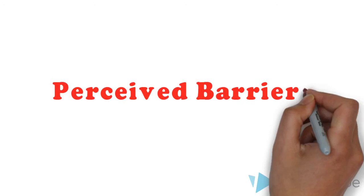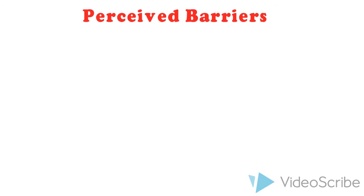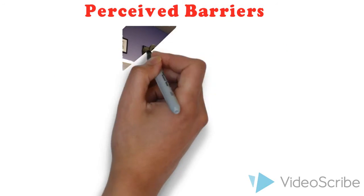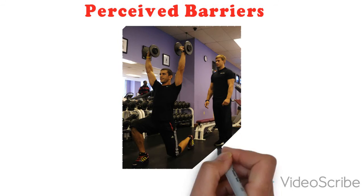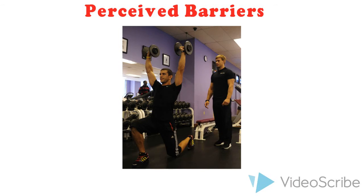Perceived barriers. Jeff is embarrassed to go to the gym because of his lack of knowledge about exercise, so he seeks a trainer.